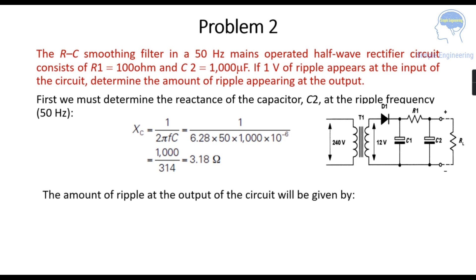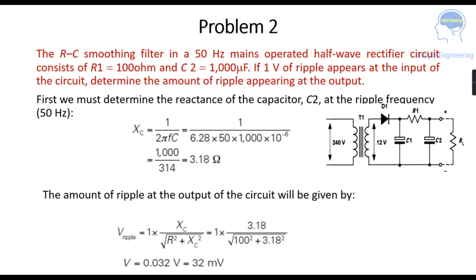Next we have to find the amount of ripple at the output of the circuit. The ripple voltage is given as V_ripple = 1 × XC divided by the square root of (R² + XC²). XC is 3.18 ohms and R is 100 ohms. So V_ripple = 3.18 divided by the square root of (100² + 3.18²). After solving this we get 0.032 volt, which is equal to 32 millivolt. So the amount of ripple appearing at the output is 32 millivolt.